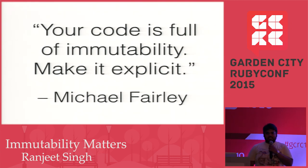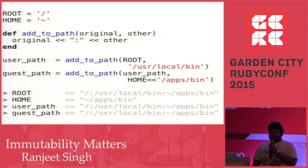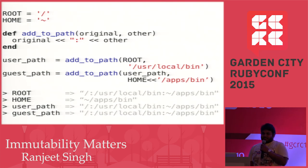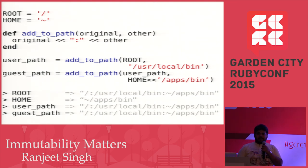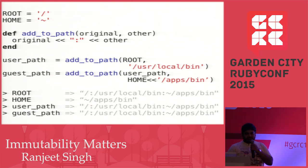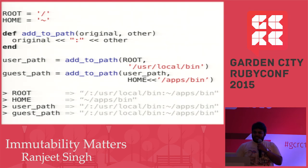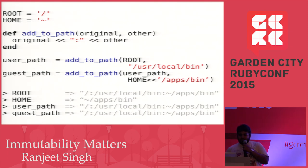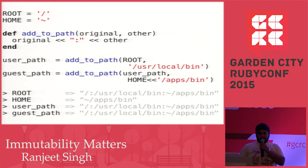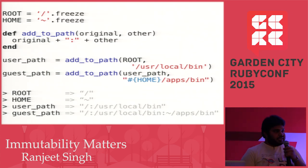Recently we did a POC for a company and found out that Ruby strings are mutable — being new to Ruby, I made this mistake. Here's a function taking an original path and another path, appending it using the shovel operator. So I created a user path and a guest path. What happened? All of a sudden my route had changed, and my home variable had also been changed.